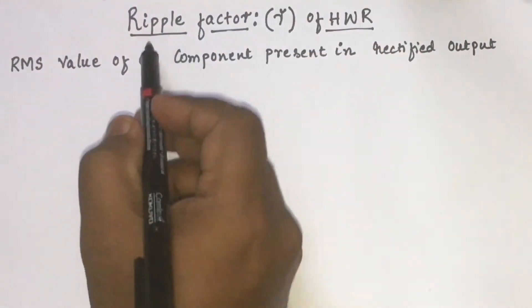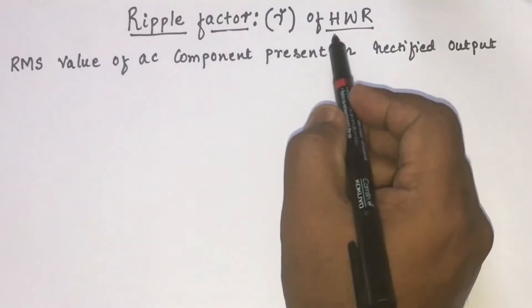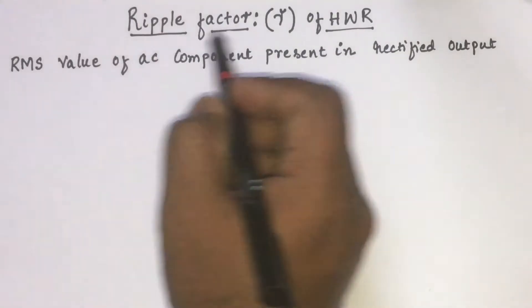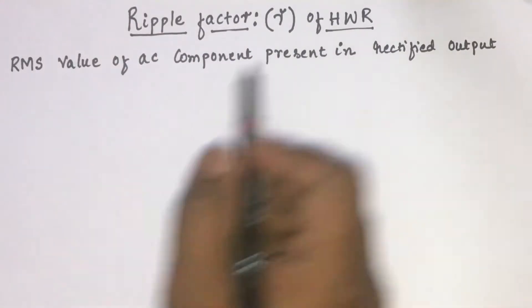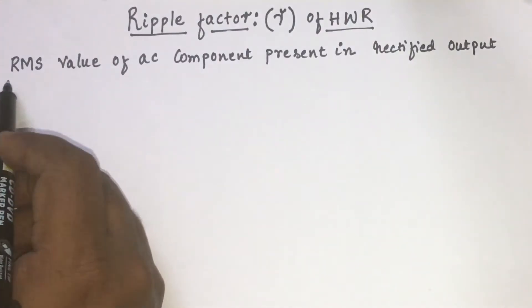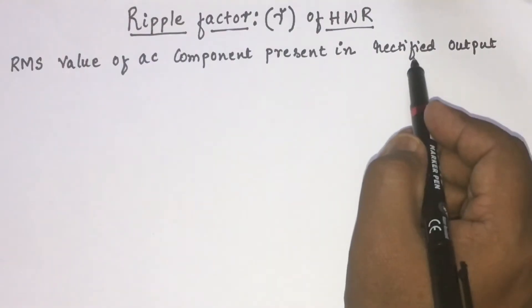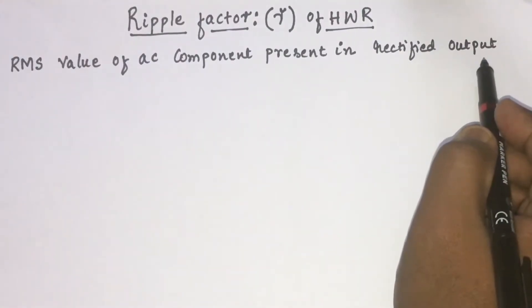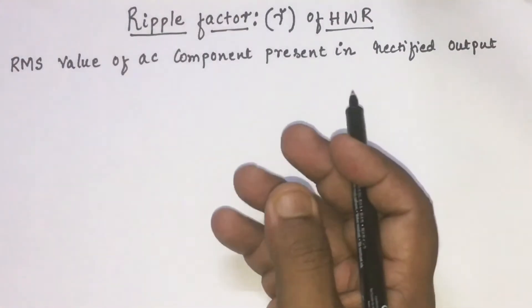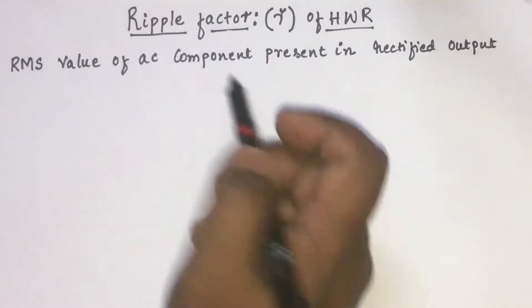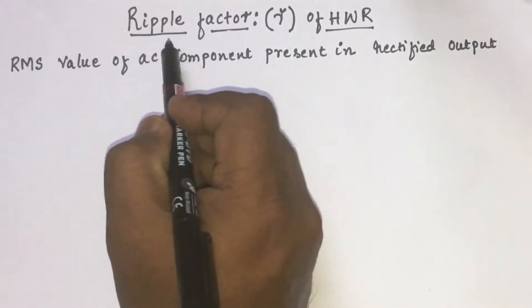Hello friends, welcome to EC Academy. In this lecture, let us understand the ripple factor of a half wave rectifier. The ripple factor of a half wave rectifier can be defined as the RMS value of AC component present in the rectified output. The amount of AC component present in already rectified output is nothing but the ripple factor.